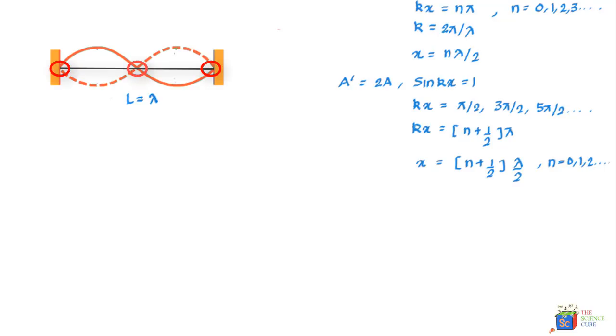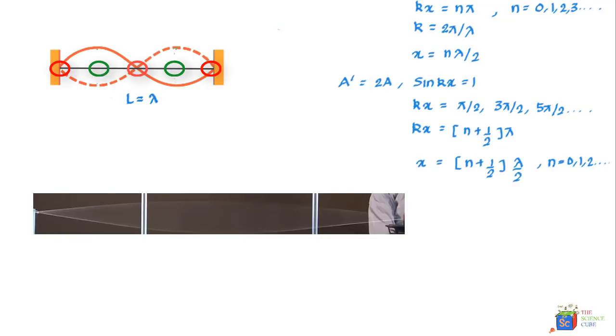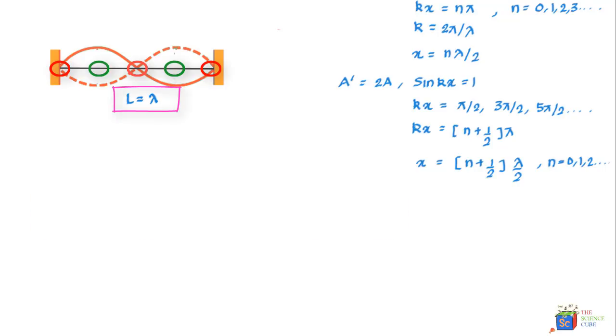Well another pattern that would have nodes at ends could be this. Now this one has three nodes and two antinodes and can be named two loop pattern. For waves moving in either direction they must have a wavelength lambda equal to L.